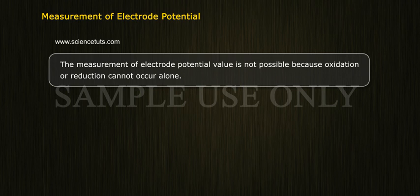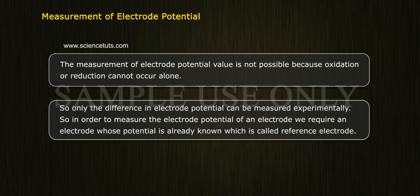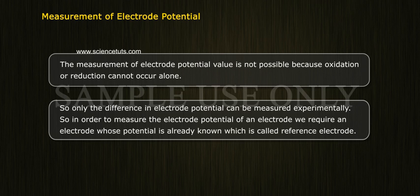Measurement of electrode potential: the measurement of an electrode potential value is not possible because oxidation or reduction cannot occur alone. So only the difference in electrode potential can be measured experimentally. In order to measure the electrode potential of an electrode, we require an electrode whose potential is already known, which is called a reference electrode.